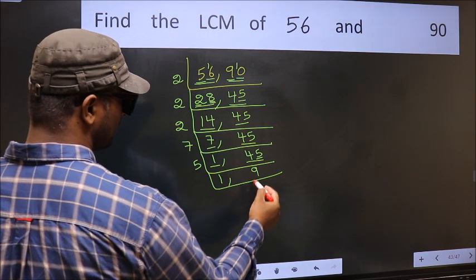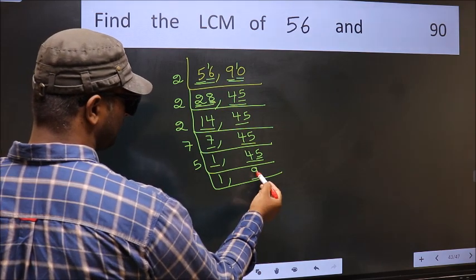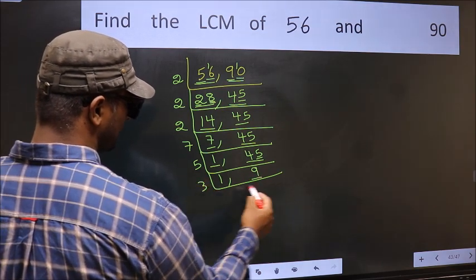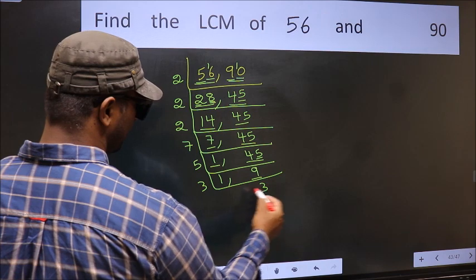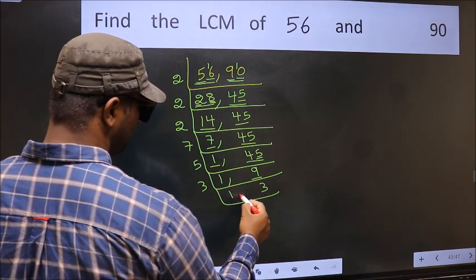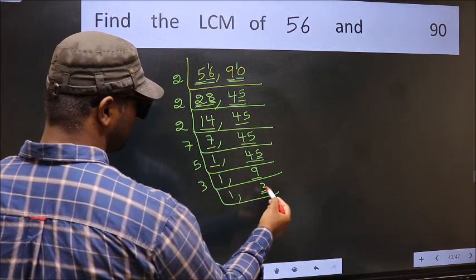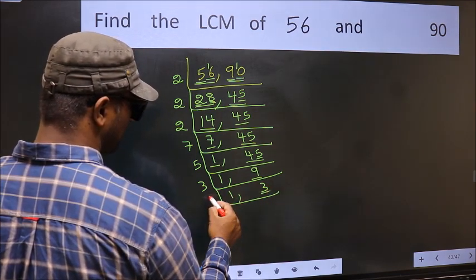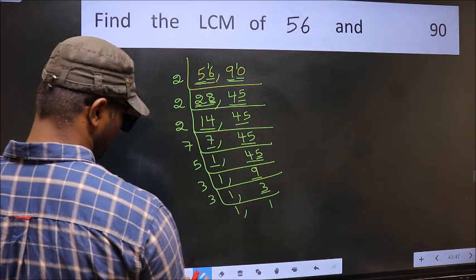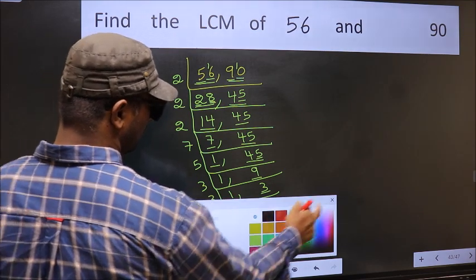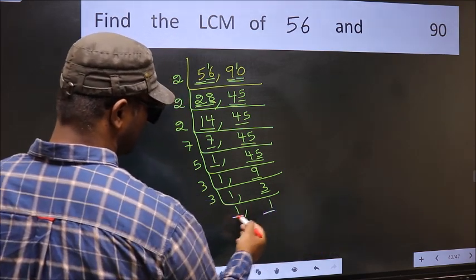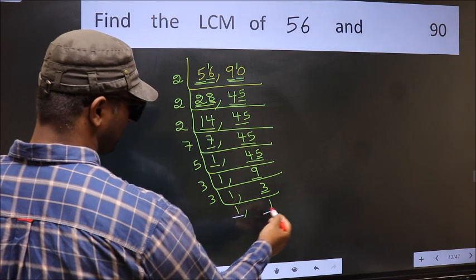Now we have 9. Nine is 3 threes, which is 9. Now we have 3; 3 is a prime number, so 3 ones are 3. We got 1 in both places.